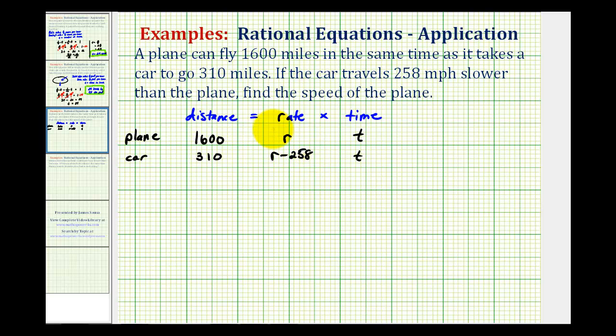So from here let's write our two equations. This first equation here would be 1,600 equals r times t or rt. And the second equation would be 310 equals the quantity r minus 258 times t.